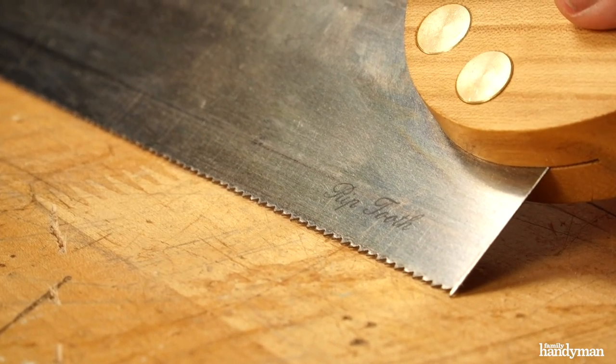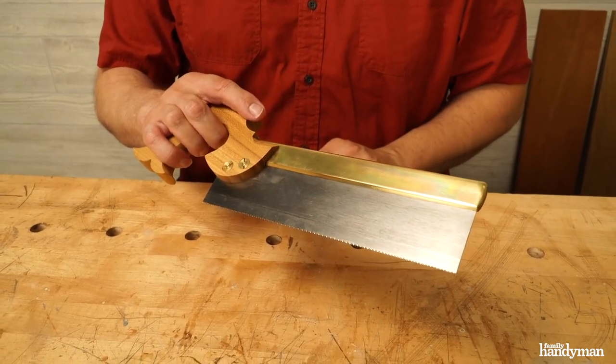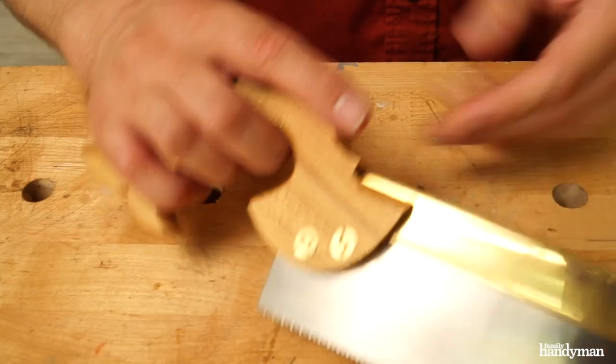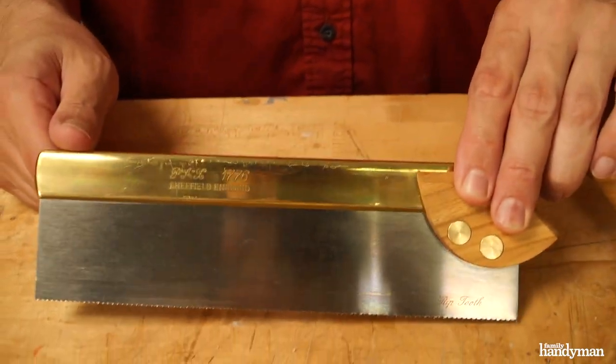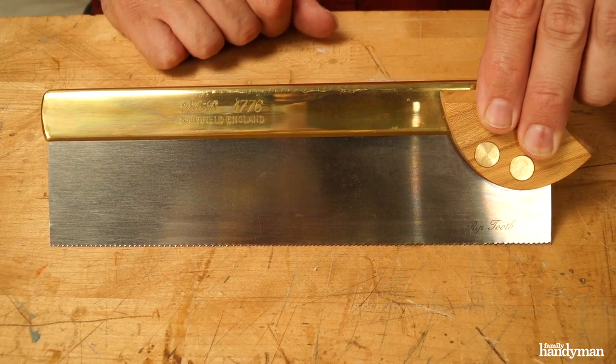The tooth design will dictate how we use this saw, whether we're cutting across the grain or with the grain. Now this saw company has been around since 1776, so these types of saws go way back.